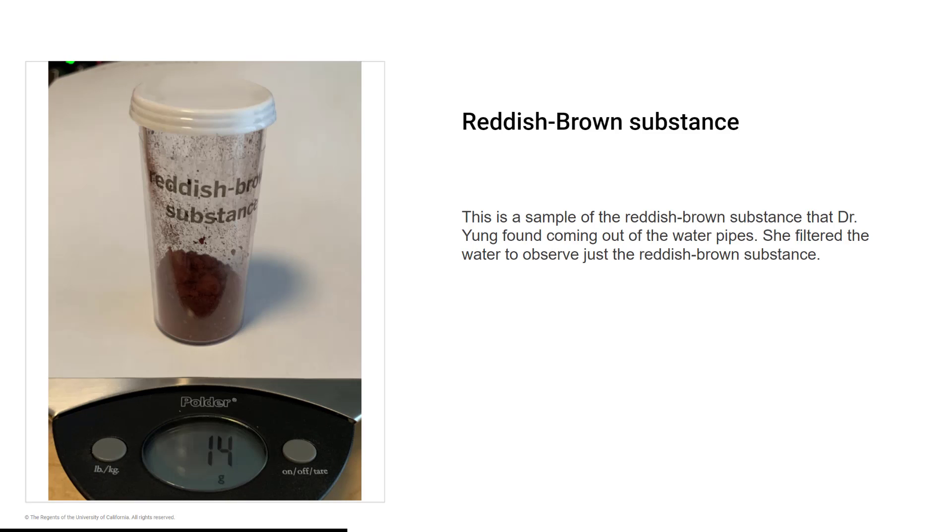Reddish-brown substance. This is a sample of the reddish-brown substance that Dr. Jung found coming out of the water pipes. She filtered the water to observe just the reddish-brown substance.